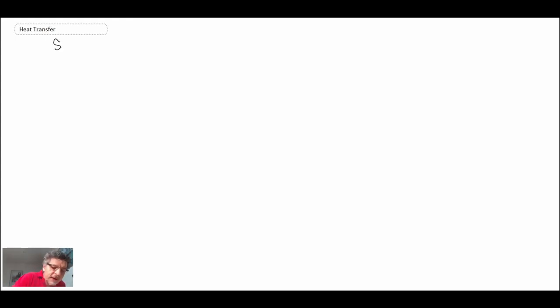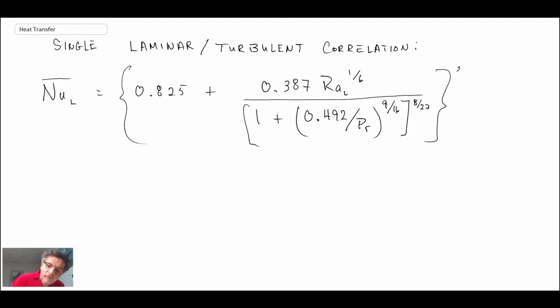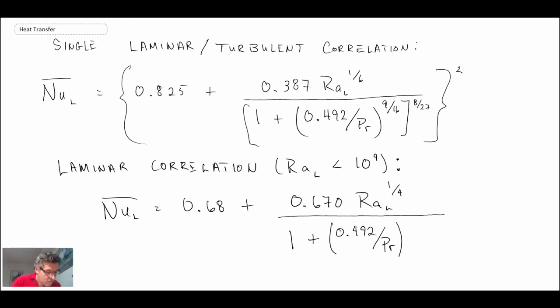This is a single correlation that would cover both laminar and turbulent: Nu_L equals 0.825 plus 0.387 Ra_L to the one-sixth divided by [1 + (0.492/Pr)^(9/16)]^(8/27), squared. Here you can see I've replaced the Grashof Prandtl with the Rayleigh number in the expression, and the properties are to be evaluated at the film temperature.